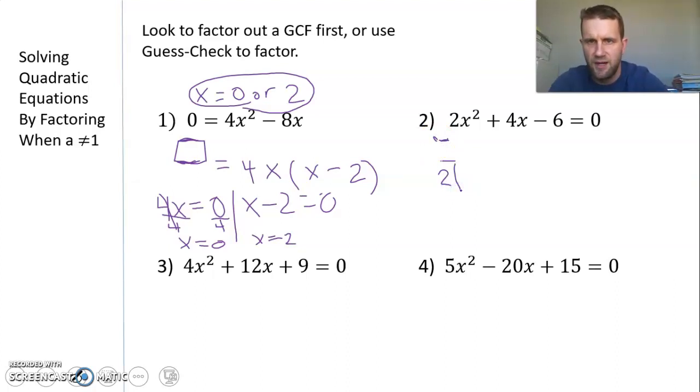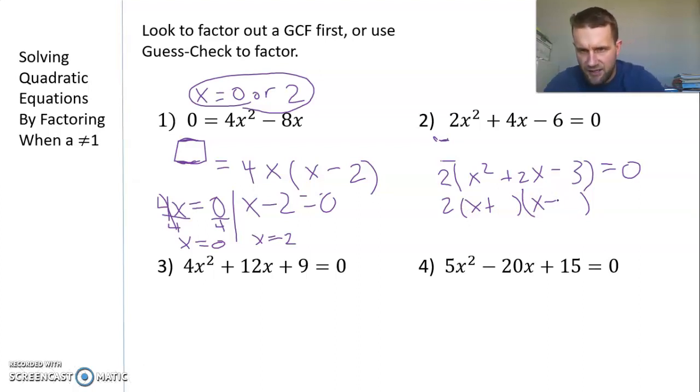I'm going to factor out 2 and divide everything by 2. I have 2(x² + 2x - 3) = 0. Now I need to factor inside. What multiplies to negative 3 and adds to 2? It's 3 and 1. Since it multiplies to negative 3, I need opposite signs. To add to positive 2, my big number 3 gets the plus and 1 gets the minus. So 2(x + 3)(x - 1) = 0.